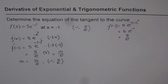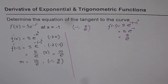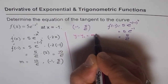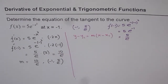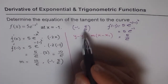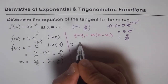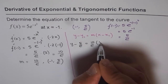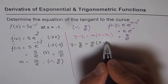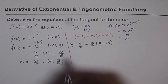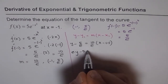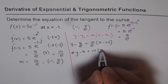Now we need to write the equation of the tangent line. Given a point and the slope, we can write the equation of the line using the formula y - y₁ = m(x - x₁). Here y₁ is 5/e, so we have y - 5/e = (10/e)(x - (-1)). Let's multiply all terms by e, giving us ey - 5 = 10(x + 1).